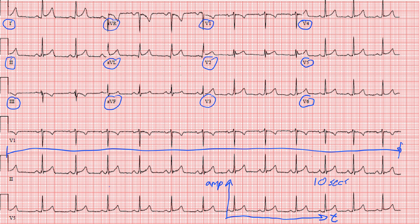It records at a speed of 25 millimeters per second. So what this means is that all these little boxes — the big and little boxes — will add up to 10 total seconds from start to end. Every big box, made up of five little boxes, is 0.2 seconds. And every little box is 0.04 seconds.